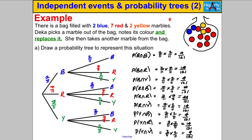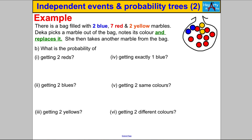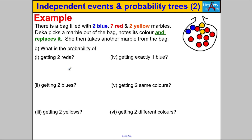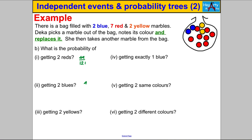That is my complete probability tree with all the possible outcomes. Now we may be asked various questions which we can use the tree to answer. Pause the video and have a go at these. Most of these we can just read off — the probability of two reds is 49 out of 121. Similarly, the probability of two blues is four out of 121, and two yellows is also four out of 121.